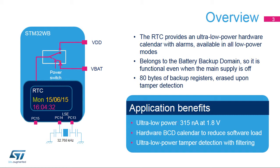The RTC embeds 80 bytes of backup registers used to preserve data when the main supply is off. These backup registers can be used to store secure data, as they are erased when a tamper event is detected on the tamper pins. The RTC consumes 315 nanoamps at 1.8 volts, including the LSE power consumption.